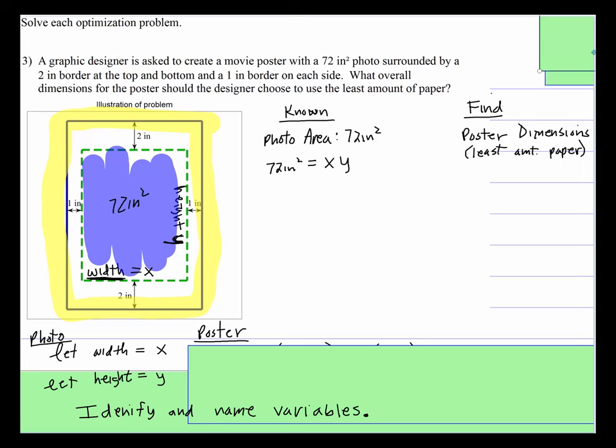We have to find the poster dimensions. What is this dimension and this dimension right there. We can use an area formula to set this up.